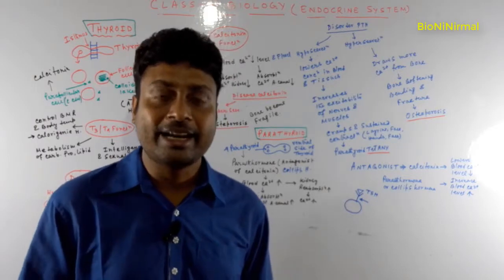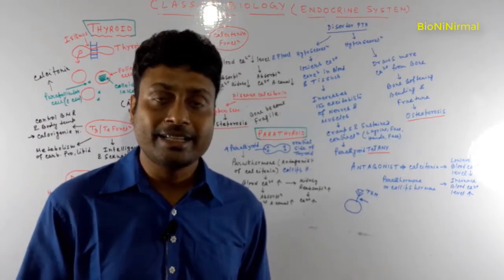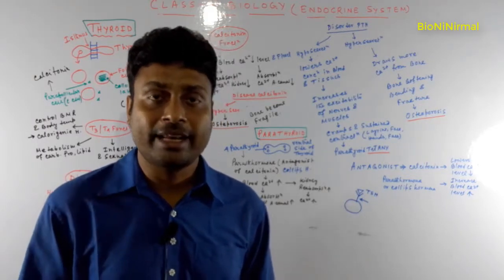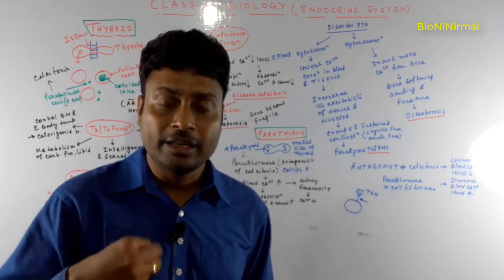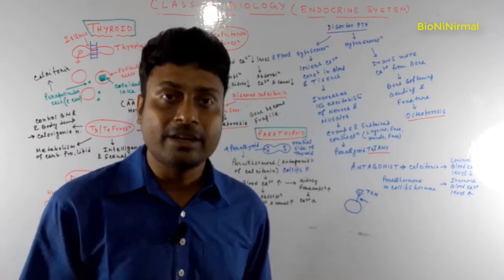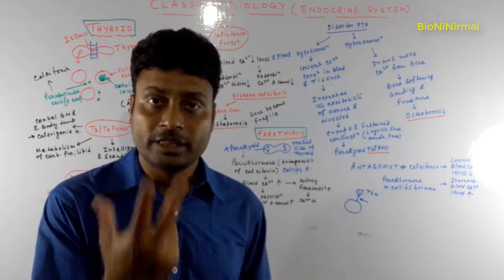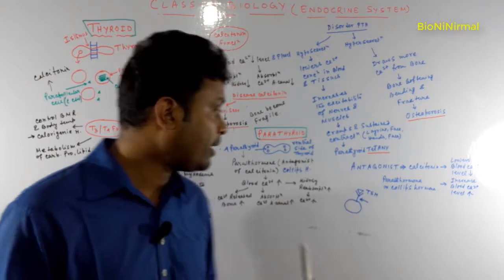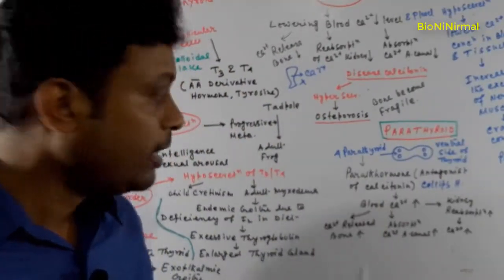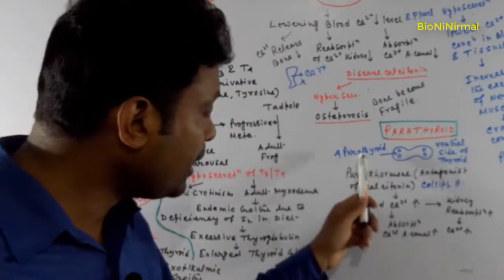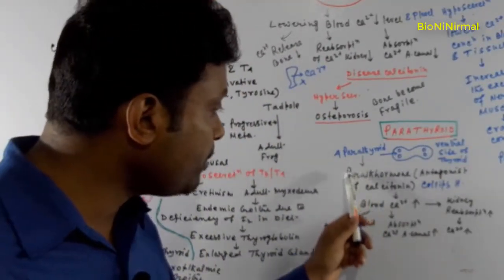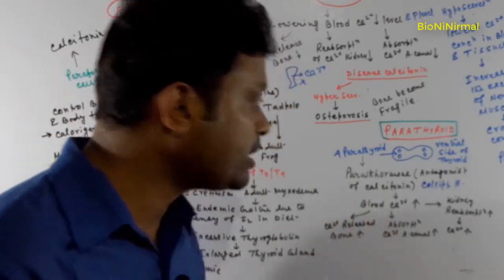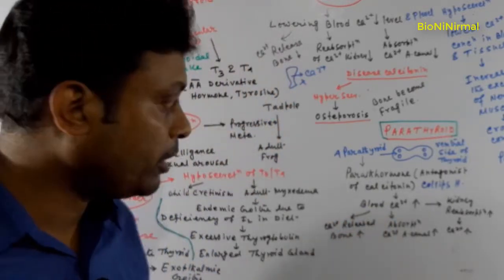Now about the parathyroid gland: the parathyroid gland is situated on the ventral side of the thyroid gland. Each thyroid gland on the ventral side contains two parathyroid glands, so there are four parathyroid glands in total. The parathyroid gland is responsible for secreting a very important hormone called parathormone, also known as collip's hormone.